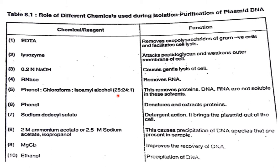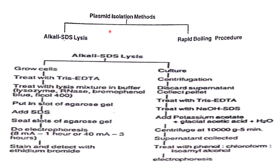Phenol denatures and extracts protein. Sodium dodecyl sulfate (SDS) acts as a detergent and brings the plasmid out of the cell. 2 M ammonium acetate or 2.5 M sodium acetate with isopropanol causes precipitation of DNA species present in the sample. Magnesium chloride improves the recovery of DNA. Ethanol is used for precipitation of DNA.